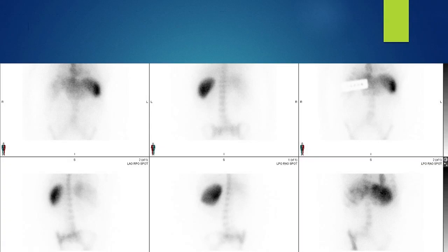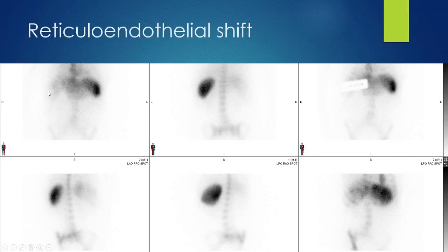Here is reticuloendothelial shift: the liver is markedly down relative to the spleen, and we see a lot of bone marrow activity. This patient had infiltrative liver disease as well as thrombocytopenia. The increased activity within the spleen may be the cause of the thrombocytopenia due to increased reticuloendothelial system activity.